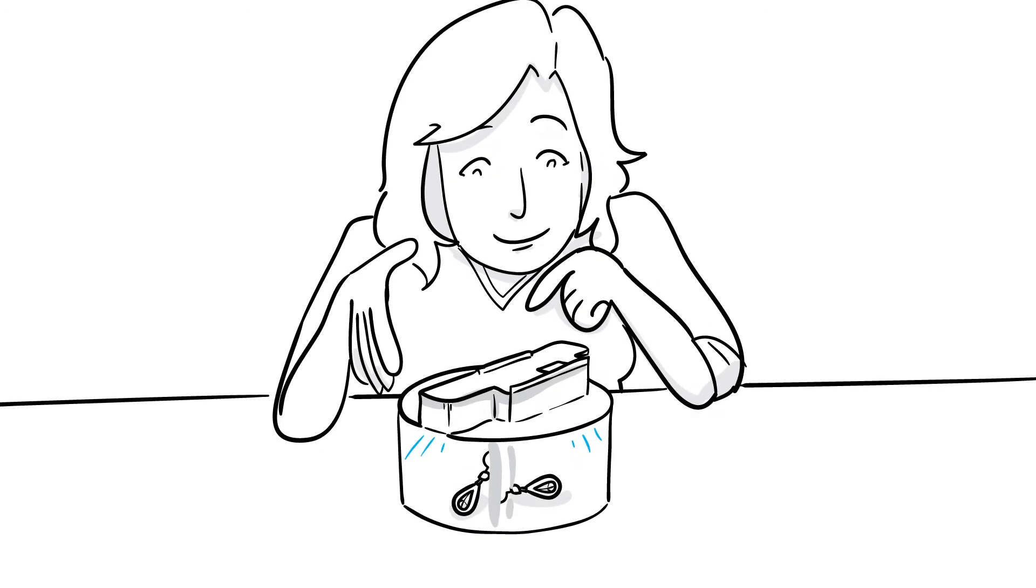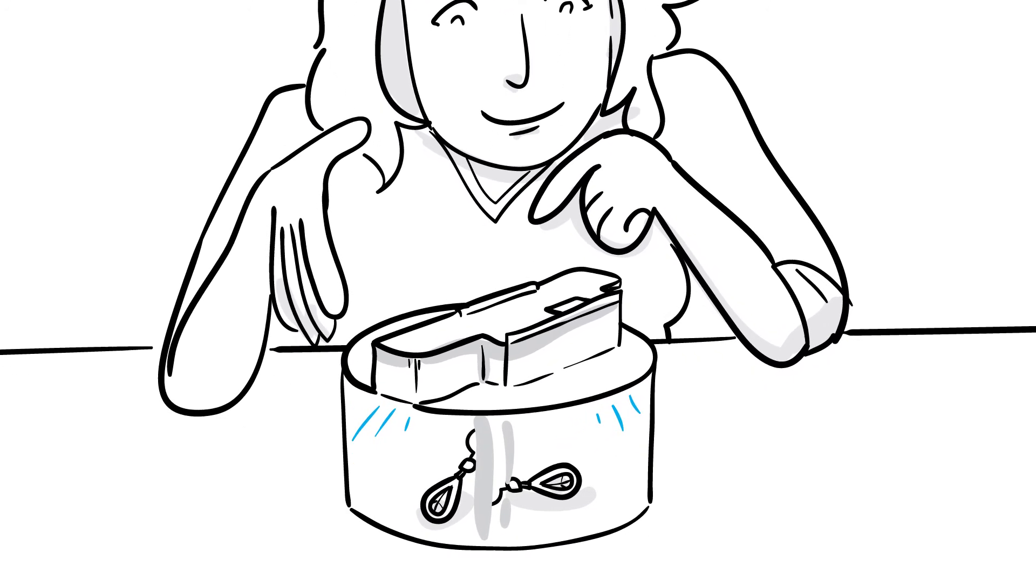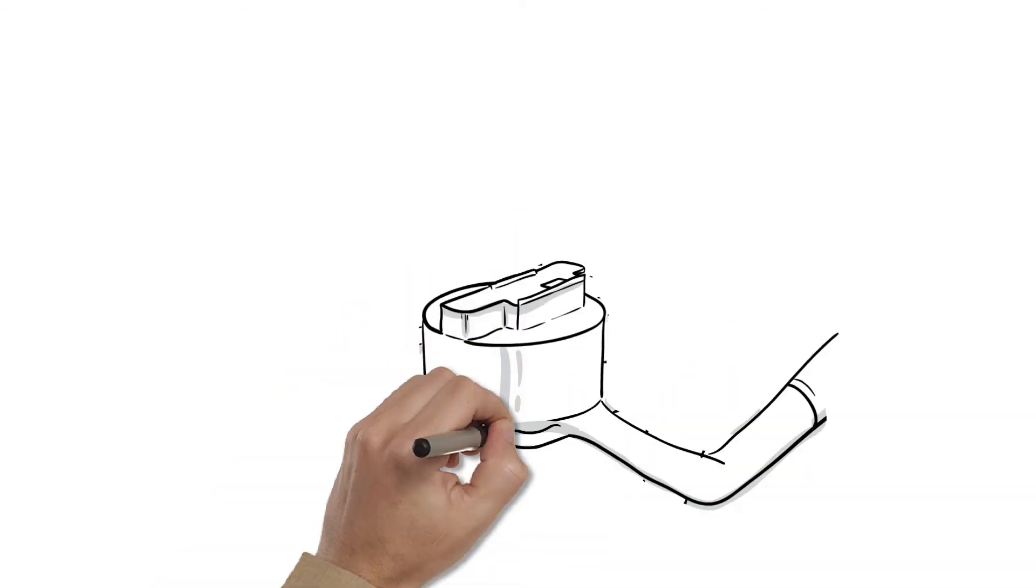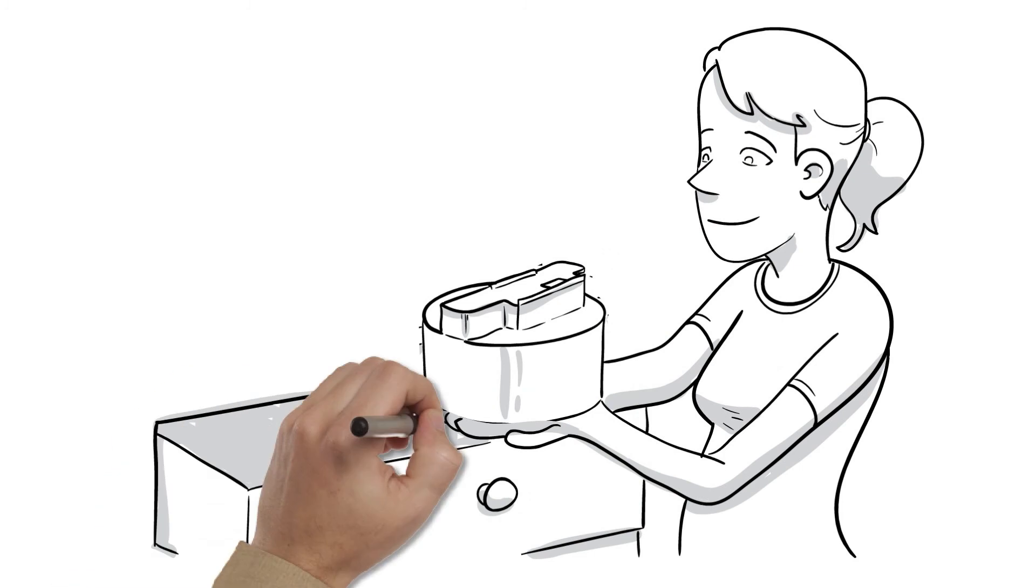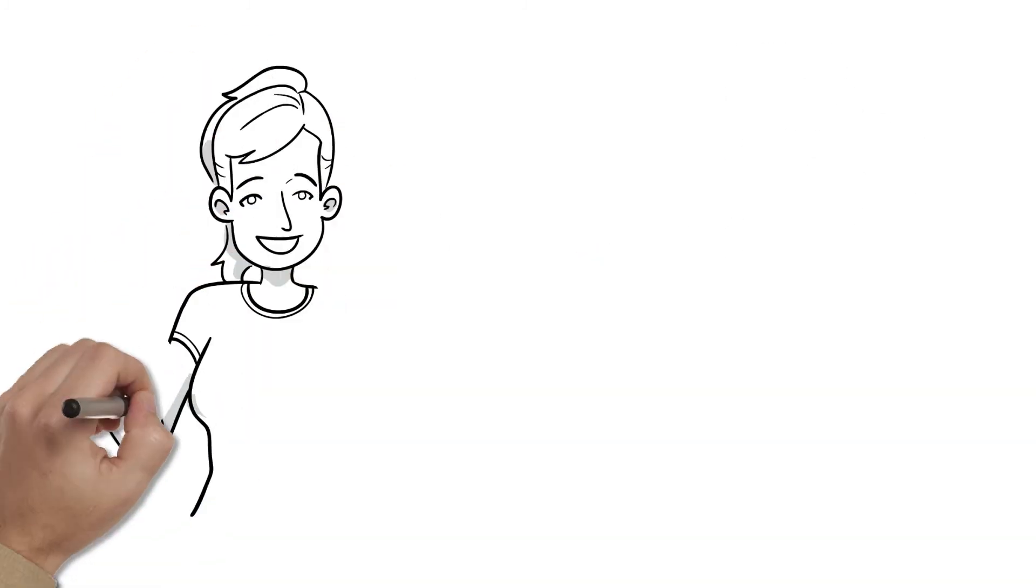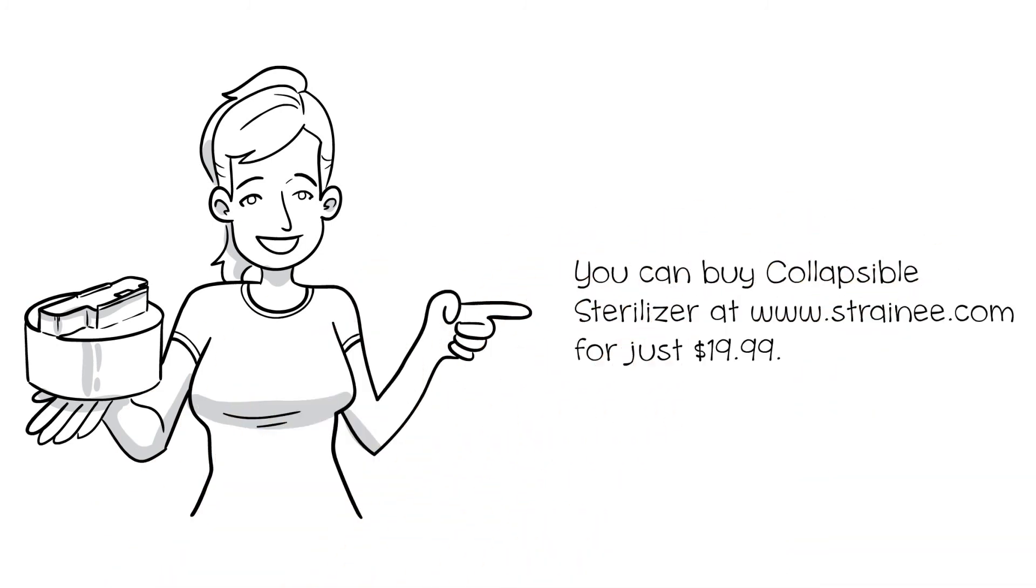Using only two AA batteries, it's easy to use and completely portable. After killing the germs and bacteria for three minutes, the UV lamp turns off automatically. Collapse it down and tuck it away in a drawer when not in use. Bacteria and germs are part of our world, but they don't have to live in our homes. Try Collapsible Sterilizer today.